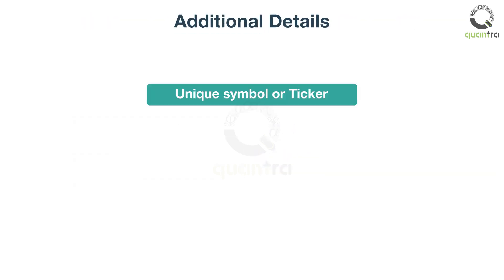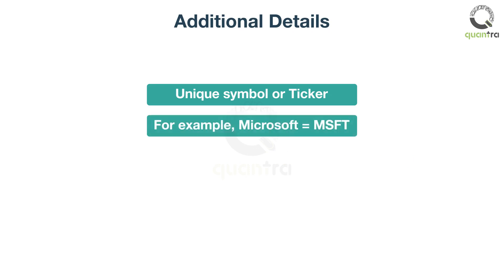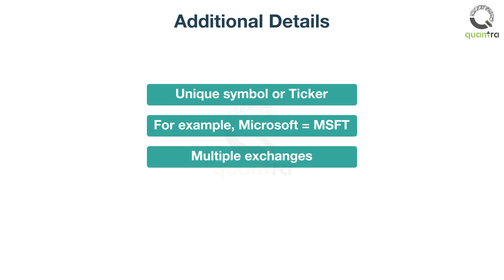Each financial instrument has a unique symbol or ticker associated with it. For example, the ticker for the stock of Microsoft company is MSFT on the NASDAQ exchange. It is also possible that the stock of a company gets traded on multiple exchanges.